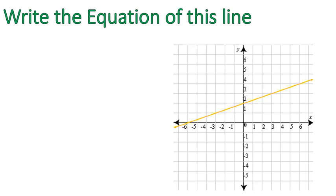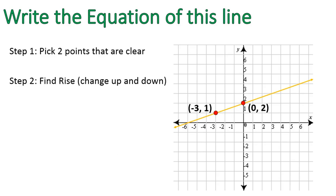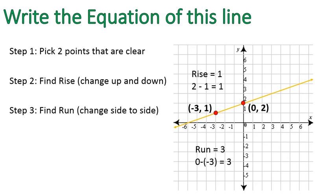So I want you to find the equation of this line. First off, we need to find our slope. So we're going to pick two points that are nice and clear. I've picked these two points. I'm going to find the rise or the change up and down, in this case it changes by one. I'm going to find the run or how much it changes from side to side, and my run is three. It changes three side to side for every one that it goes up. That means my slope, or my rise over my run, is equal to one-third. It's a fraction, and that's perfectly okay.